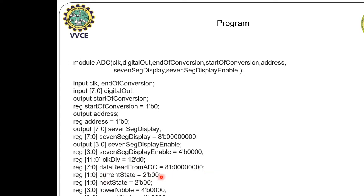Current state is initialized to 00. Next state is initialized to 00. Lower nibble and upper nibble are both initialized to 00. The 7-segment display uses quotes since we have values from 0 to F, that is 0 down to 15. Quotes are used for the lookup table.